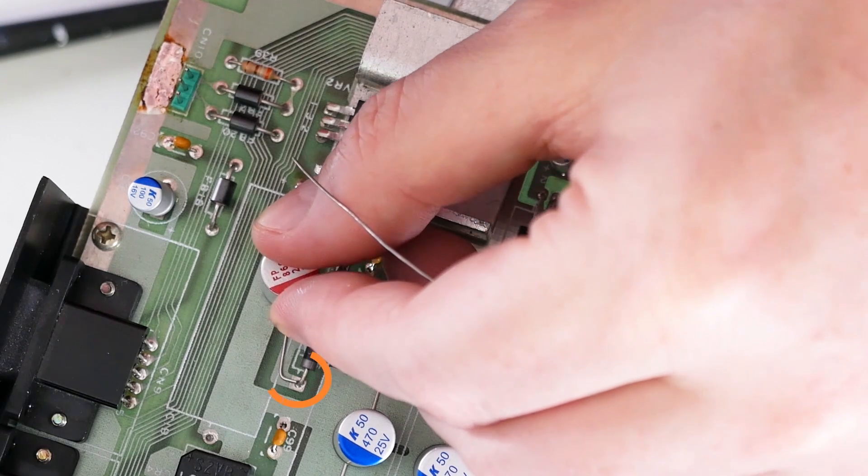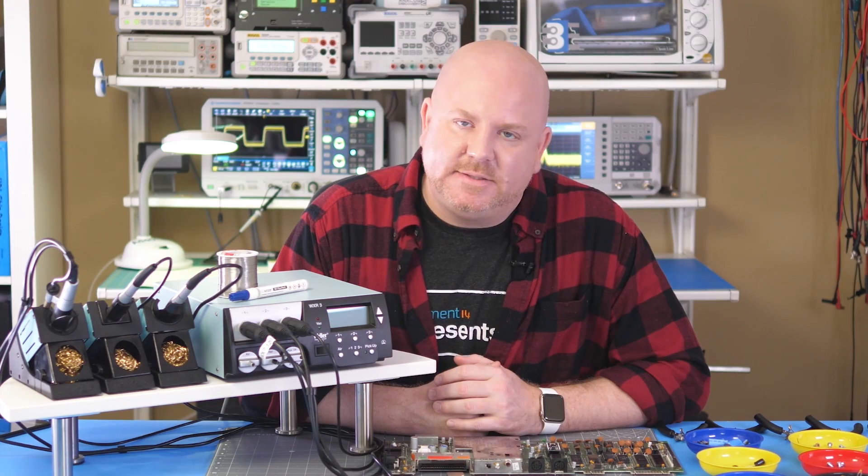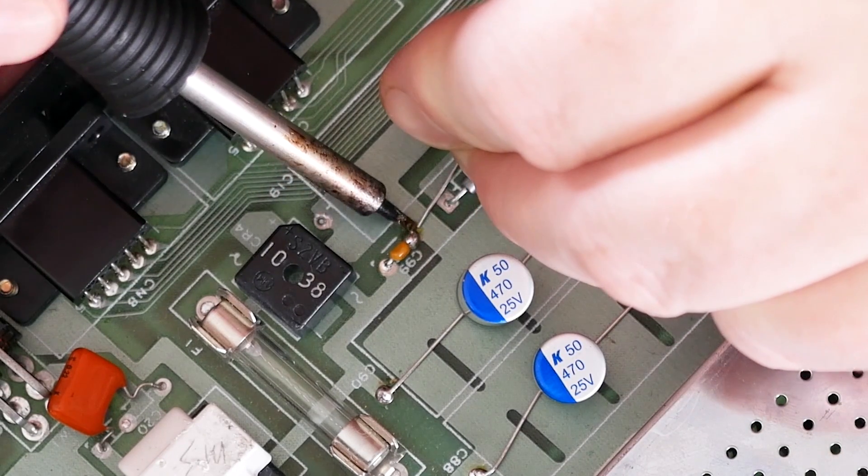The leads on this last capacitor would not fit the original holes. I needed to get the cathode or negative side to another ground point. Initially, I tried to use this diode. Then I realized that connection wasn't ground at all. So I moved the lead over to this ceramic capacitor instead.